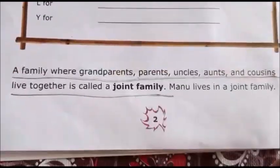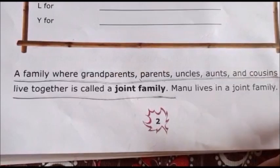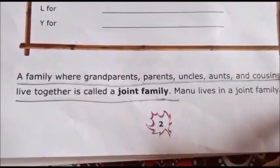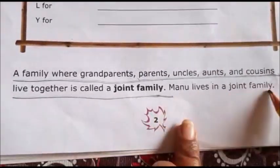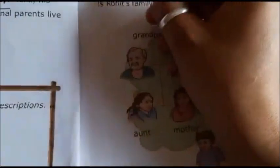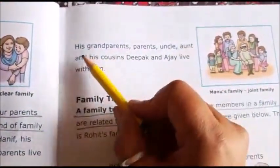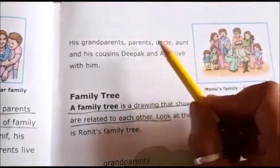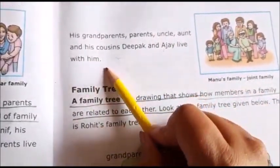A family where grandparents, parents, uncles, aunts and cousins live together is called a joint family. Manu lives in a joint family — as you can see in the picture, Manu lives with his grandparents, parents, uncle, aunt, and his cousins Deepak and Ajay.